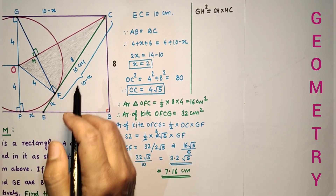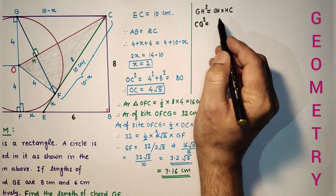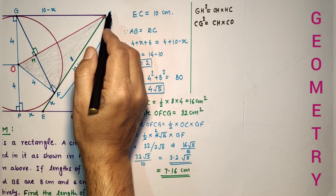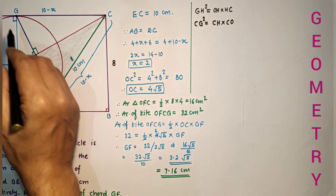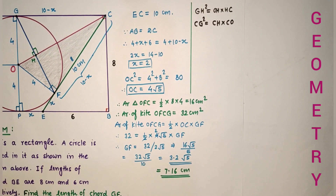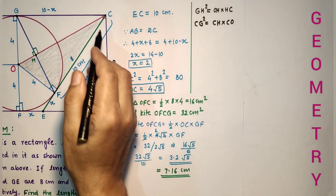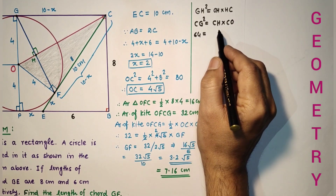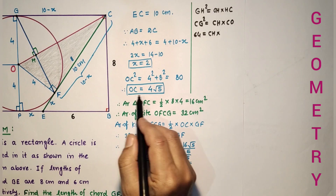We can also use CG² equals CH times CO. We already found CG equals 8 and CO equals 4√5. So 8² equals CH times 4√5, giving CH equals 64 divided by 4√5, which is 16 by √5.